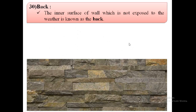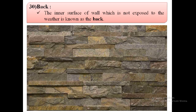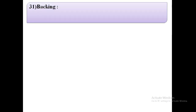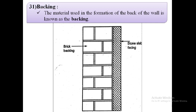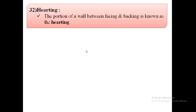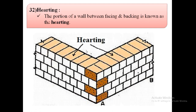The next term is back. The inner surface of the wall which is not exposed to weather is known as the back — it is opposite to the face. The material used in the formation of the back of the wall is known as backing. The portion of the wall between the facing and the backing is known as the hearting.